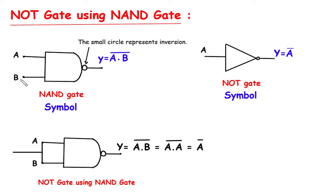A and B are the inputs and Y is the output. The small circle represents inversion. The output Y is given by Y equals A dot B whole bar.